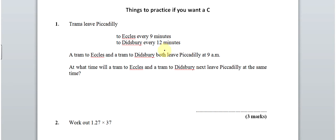Here we go with the answers to number 9. So first question is a time question and it tells us that the trams leave Piccadilly to Eccles every 9 minutes and to Didsbury every 12 minutes. A tram to them both leave Piccadilly at 9am. At what time will a tram to Eccles and a tram to Didsbury next leave Piccadilly at the same time?